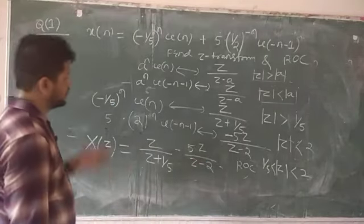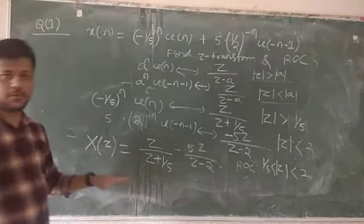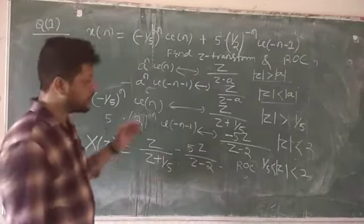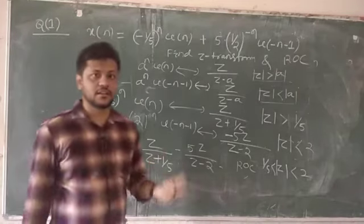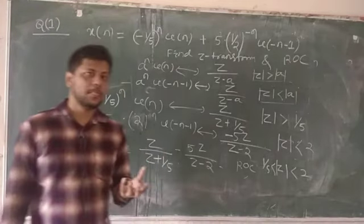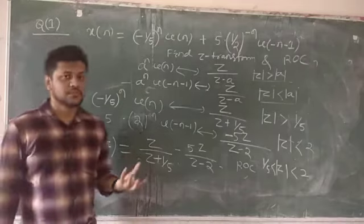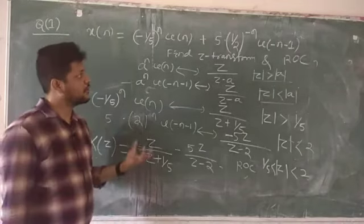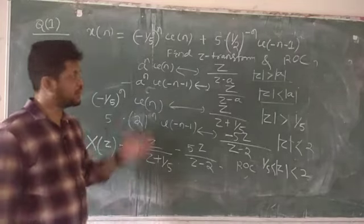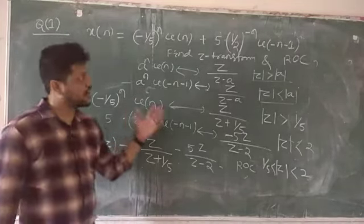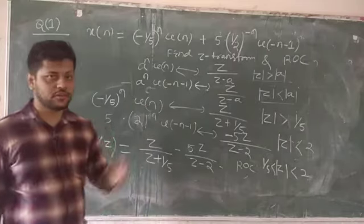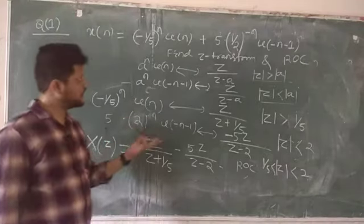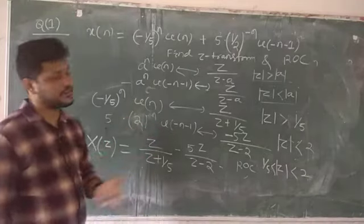This type of question is repeatedly asked in competitive examinations. Only the values will be changed, but the structure is the same. The ROC for a two-sided sequence always forms a ring in the z-plane.